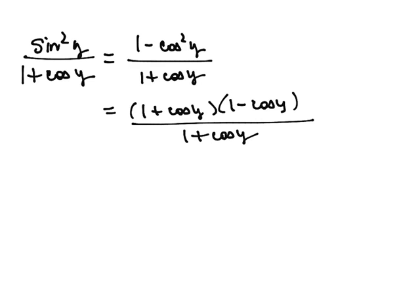So we have a common factor of 1 plus the cosine of y which we'll divide out, and so our answer is 1 minus the cosine y. We have rewritten our trig identity so it is not in fractional form.